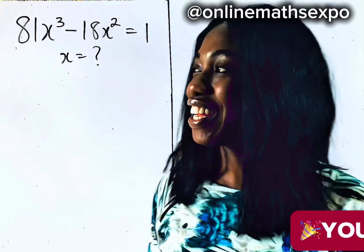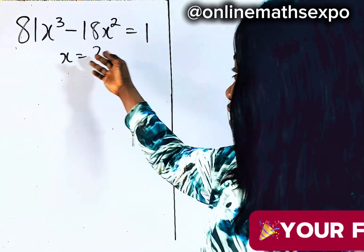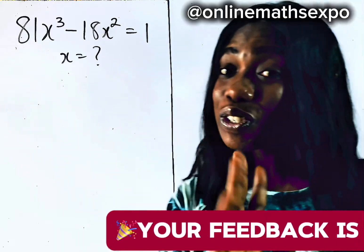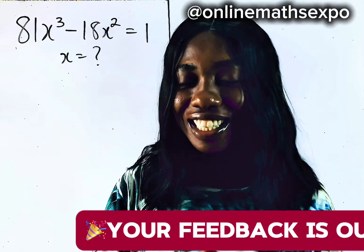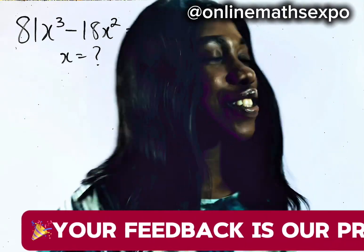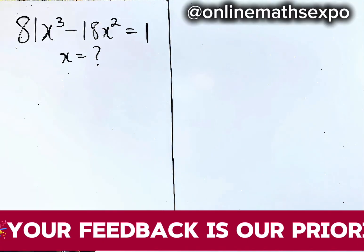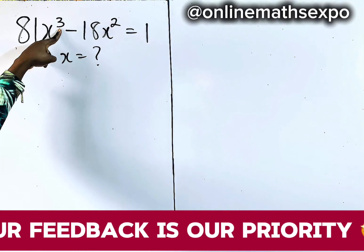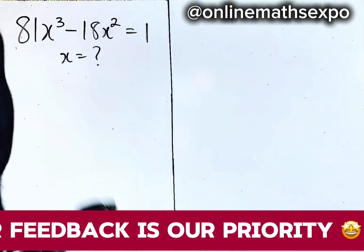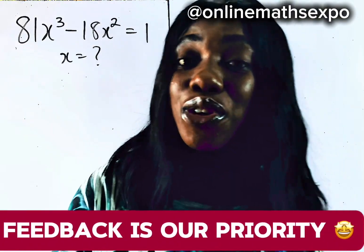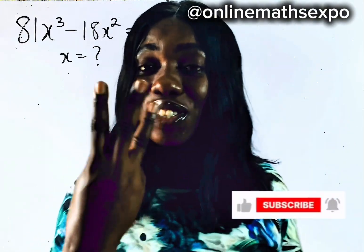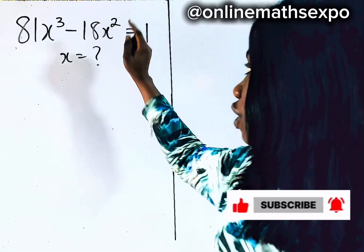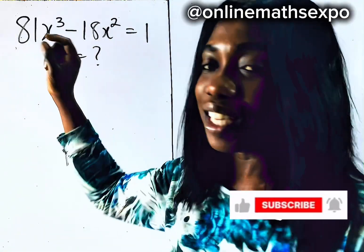Welcome, lovely ones. Let's solve this equation together. Now, this looks tricky, right? But it's just so easy to relax. Let's do it together. So to answer this question, you observe carefully that the highest power of x is 3. What it means is that at the end of solving, we expect to have three solutions for x. So we call this kind of equation a cubic equation.